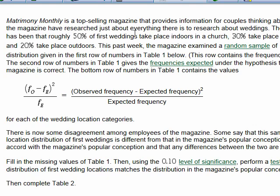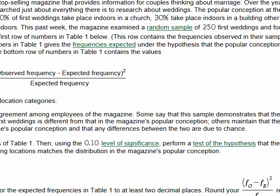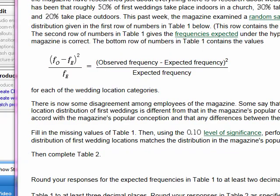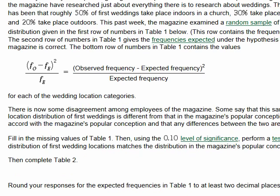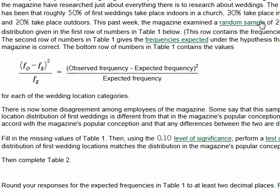Matrimony Monthly is a top-selling magazine that provides information for couples thinking about marriage. Over the years, writers for the magazine have researched just about everything there is to research about weddings. The popular conception at the magazine has been that roughly 50% of weddings have taken place indoors in a church, 30% take place indoors in a building other than a church, and 20% outdoors.